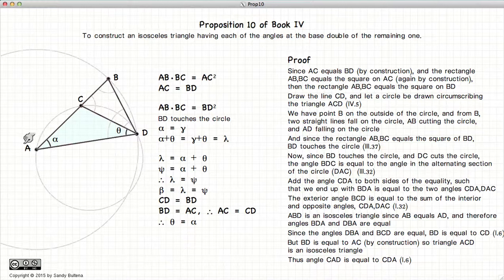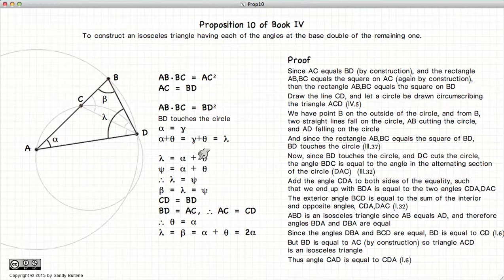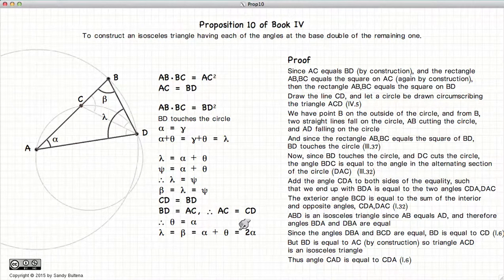So if AC is equal to CD, we have another isosceles triangle. And if this is an isosceles triangle, then the two base angles are equal, so alpha is equal to theta. Well, we had that lambda was equal to beta, and we had that lambda is equal to alpha plus theta. But alpha and theta are equal, so lambda is equal to beta is equal to twice alpha.